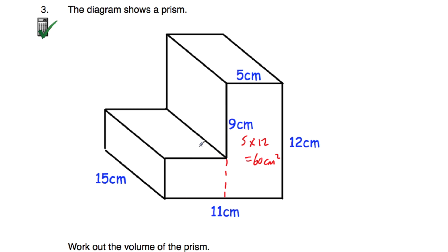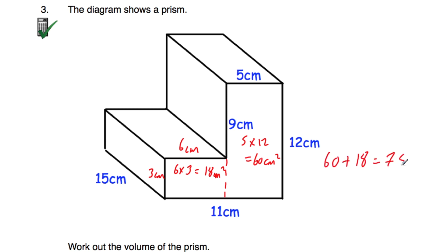Now if we look at the other rectangle, the whole width of the shape is 11, and this part is 5, so 11 take away 5 is equal to 6 centimetres. In terms of the height: the whole shape is 12, and this part is 9, so 12 take away 9 is 3 centimetres. So 6 times 3 is 18 centimetres squared. Adding together: 60 plus 18 is equal to 78 centimetres squared. Now multiplying by the length of 15: 78 multiplied by 15 is equal to 1170 centimetres cubed.